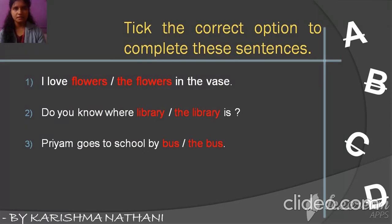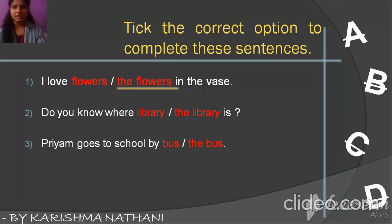Tick the correct option to complete the sentences. I love blank flowers in the vase — flowers is plural, so THE: I love the flowers in the vase. Do you know where blank library is — we are talking about a particular place, so THE: do you know where the library is?